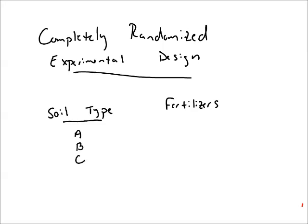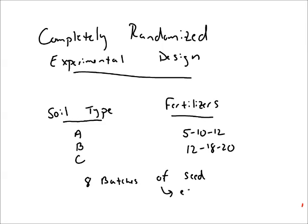And two fertilizers. There's 5, 10, 12 and 12, 18, 20. Eight batches of seed will be processed at each combination of soil types and fertilizers. So that is our situation and we want to find the yield of the crop.